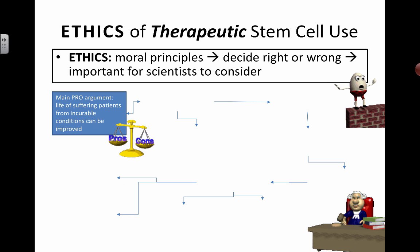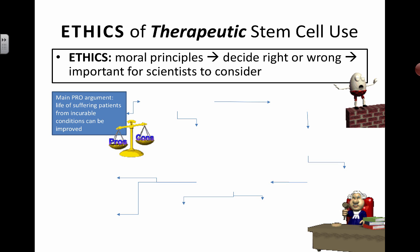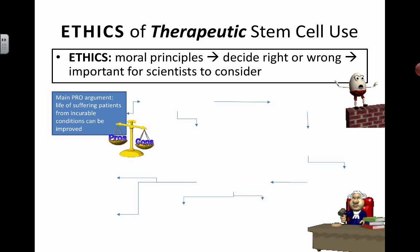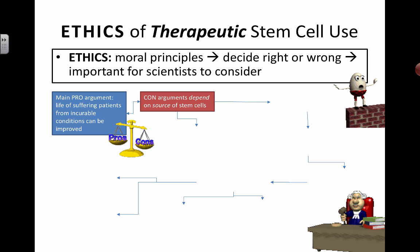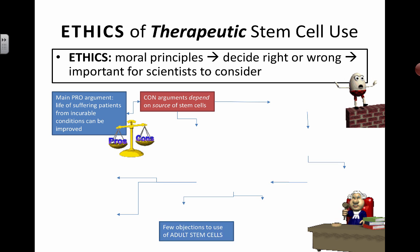We have this in the form of a flow chart. The main pro argument for therapeutic stem cell use is that you can decrease suffering in patients who have diseases and incurable conditions — you can help improve their lives. The con arguments, or the arguments that go against therapeutic stem cell use, depend on the source of stem cells.